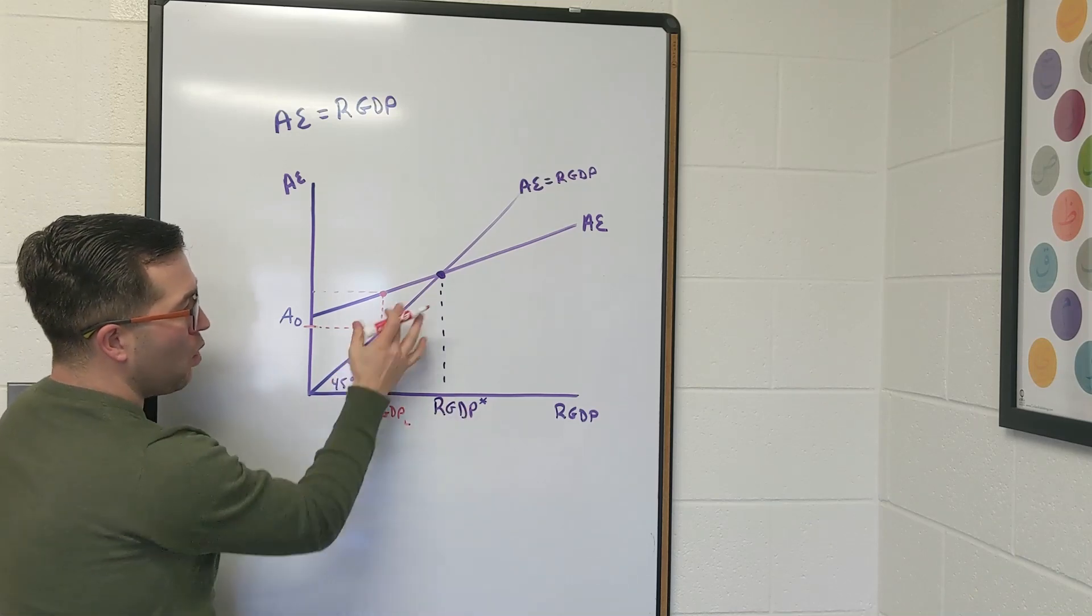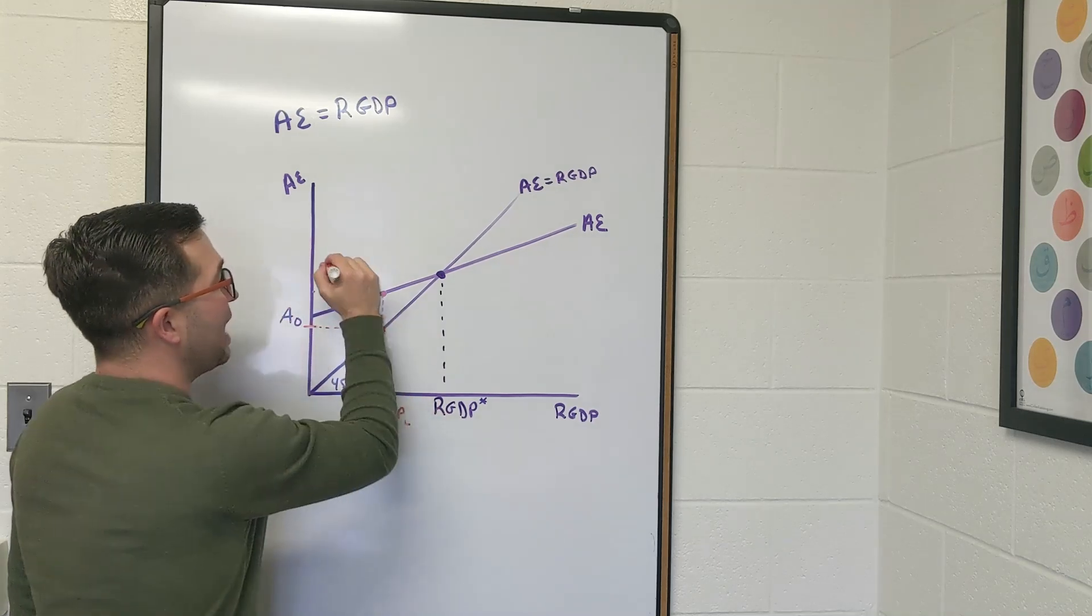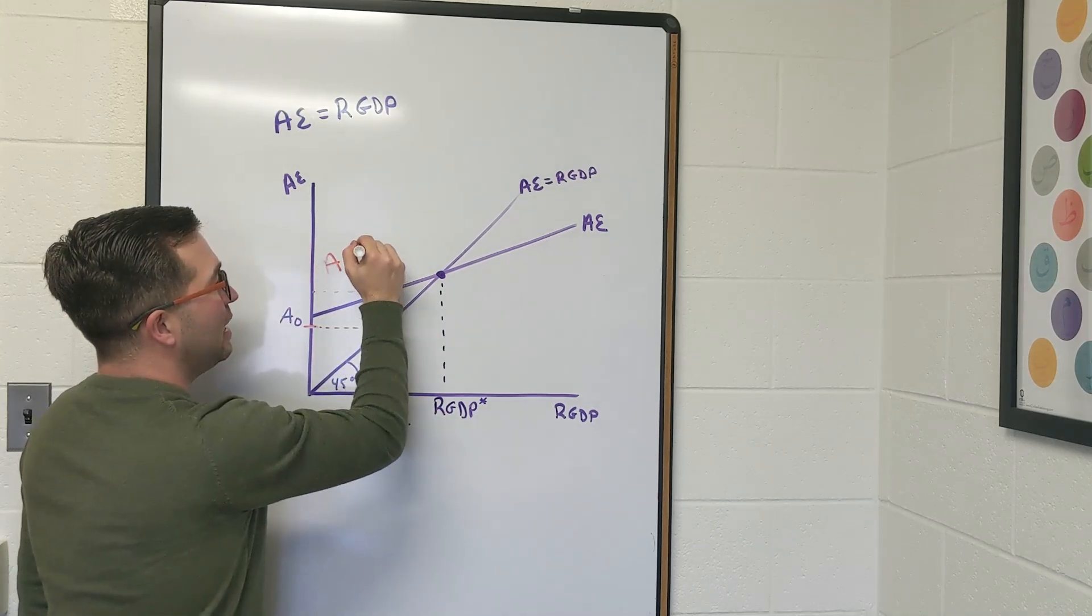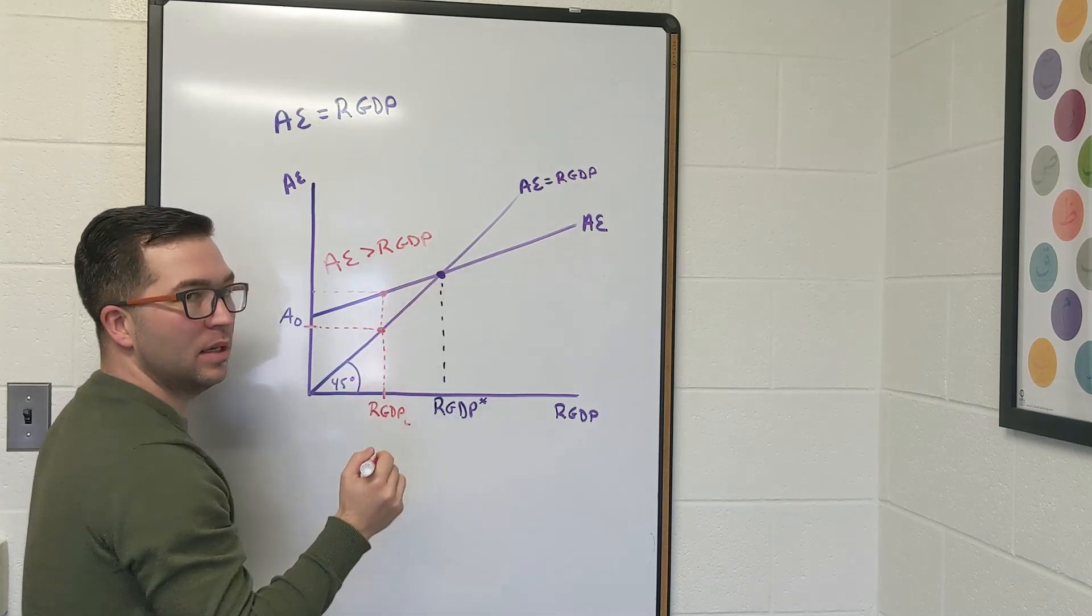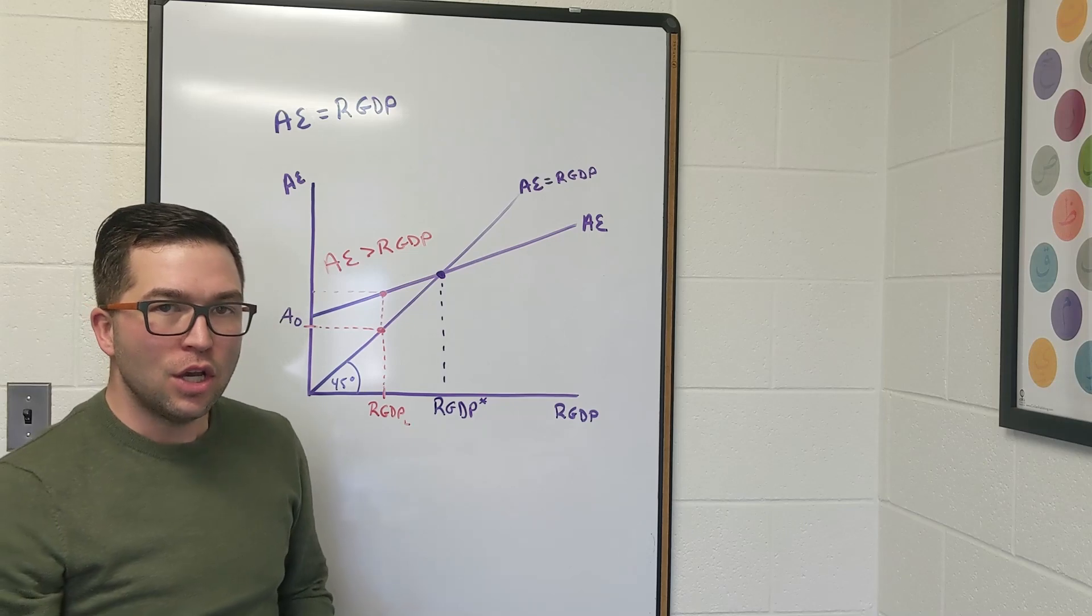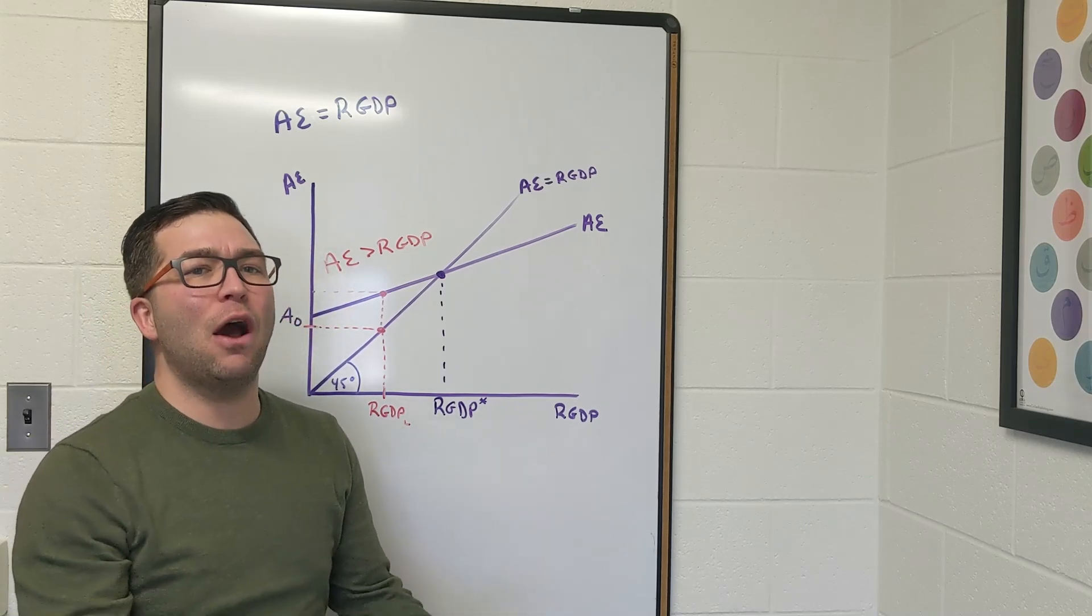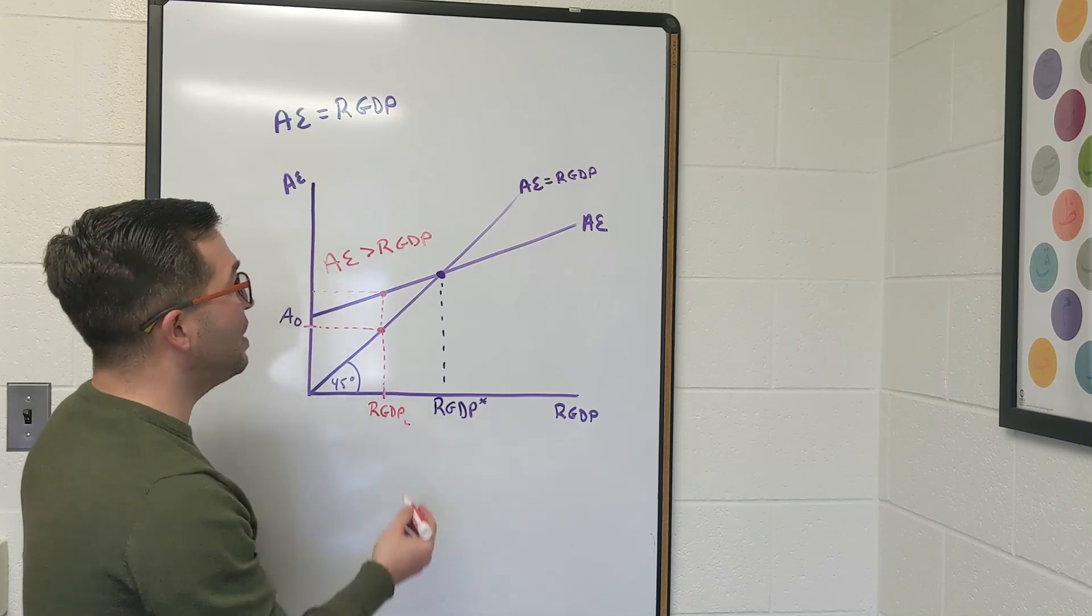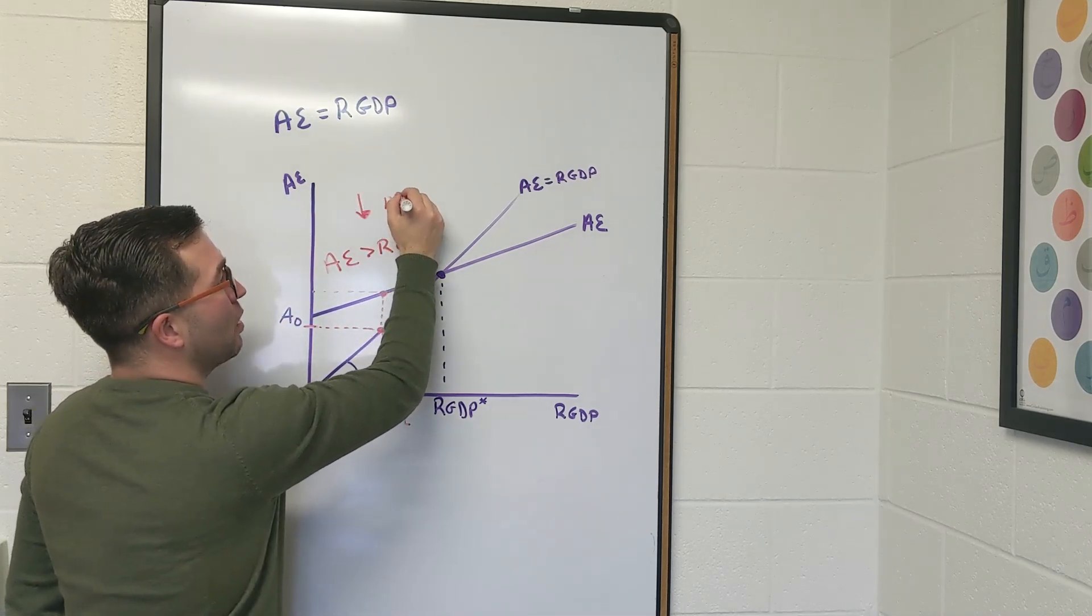So any time we're below, we're hitting this part, which we talked about with the 45 degree line, means that aggregate expenditure is greater than that real GDP. Meaning our spending is greater than our production. So how are we going to spend more than what's being produced is we must be taking out of inventories. So this is going to lead to a decrease in those inventories.